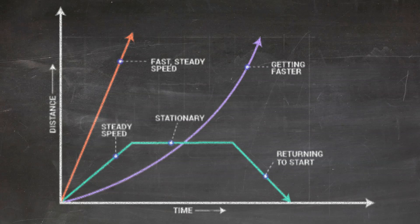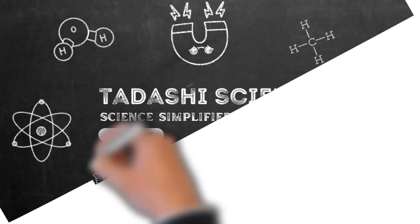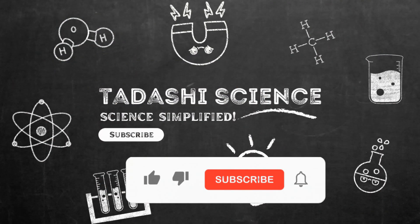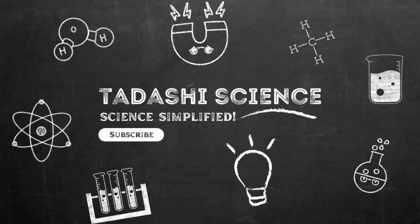Now you know how to use a distance versus time graph to describe the motion of an object. If you found this video helpful, please like the video and subscribe to our channel so we can produce more helpful science content. If there's a specific topic you need help with, please let us know in the comments.